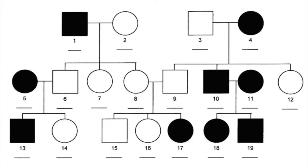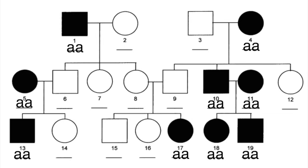Because I have my computer here, let's go ahead and genotype this together. This is an autosomal recessive disorder from the process of elimination we've just conducted. The first thing we can do is genotype all affected individuals as homozygous recessive, because they are in fact affected by this disorder. That means individuals 1, 4, 5, 10, 11, 13, 17, 18, and 19 are all going to be homozygous recessive individuals.